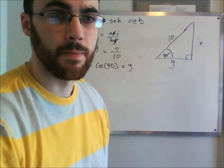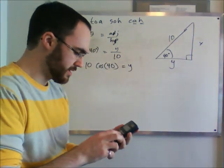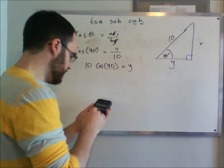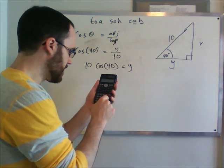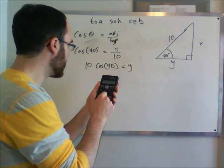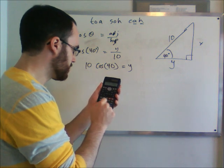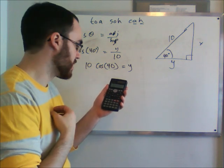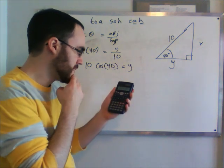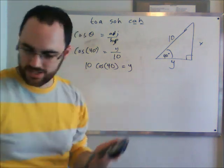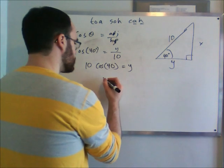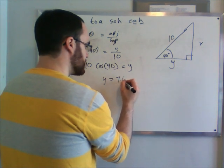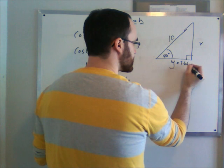So now that I have my calculator, I can go ahead and punch this in. So I just do 10 times cos, and you just type the angle as 40. Press enter. And make sure your calculator is in degrees, not radians, by the way. So this is 7.66. So y equals 7.66. So now we know this side, 7.66.